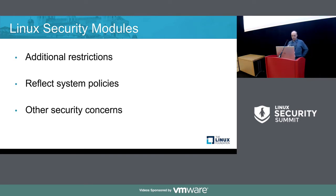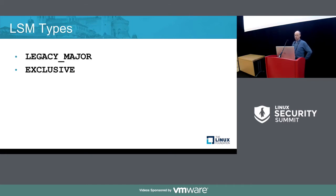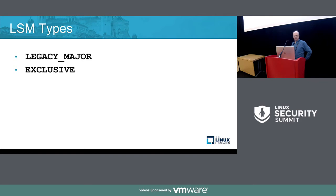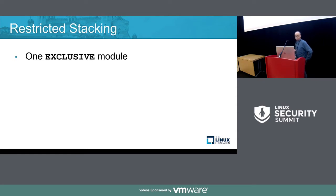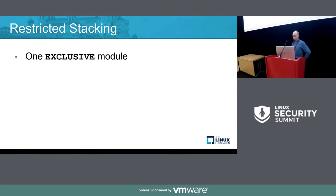We've changed that. Now we have LSM types. We've got legacy major — the old kind of major modules: SELinux, SMAC, Tomoyo, AppArmor. We also have some modules marked as exclusive. An exclusive module means you can only have one of them. SELinux is marked exclusive, AppArmor is marked exclusive — that means you can't use them both at the same time.